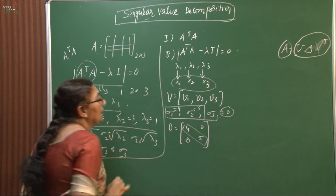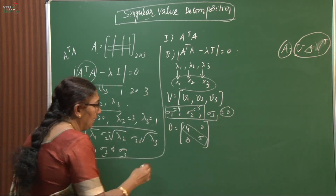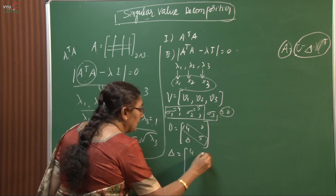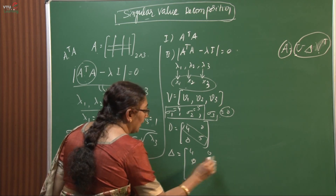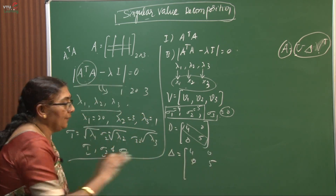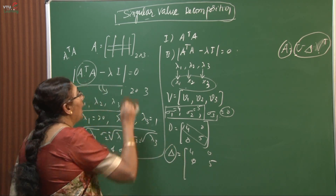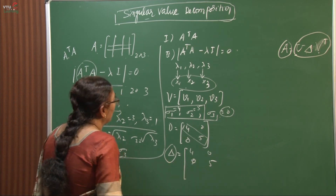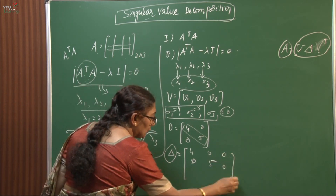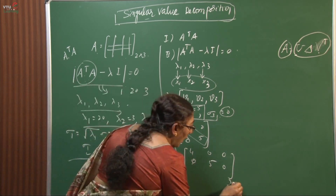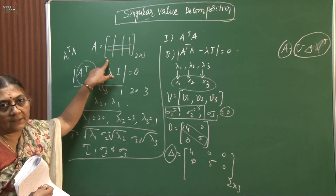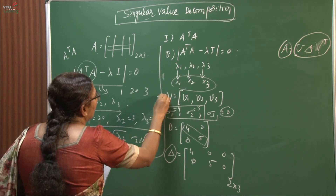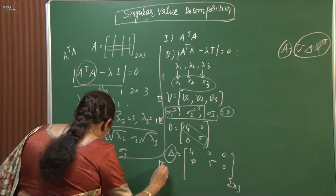The non-zero singular values — say sigma 1 and sigma 2 — form the diagonal matrix D. Next, we frame delta by fixing D in the upper corner of delta. The order of delta must equal the order of the given matrix. For example, if the given matrix is 2 cross 3, the rest of the positions in delta are filled with zeros to match that order.